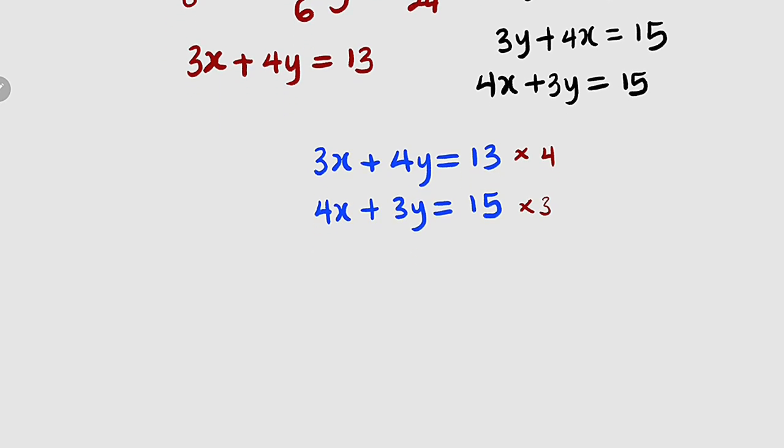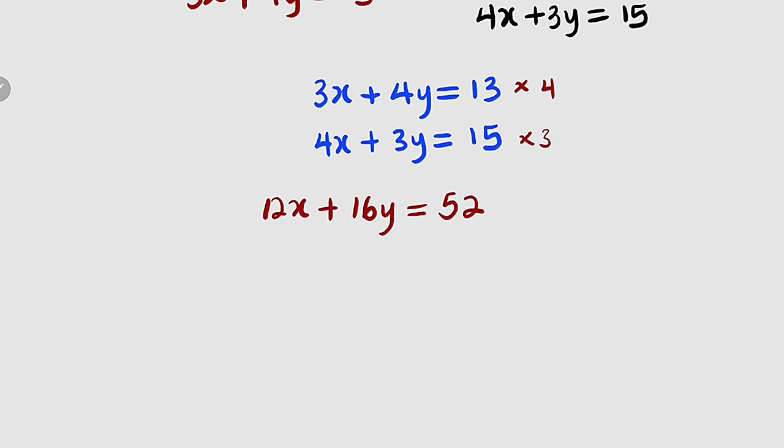If you multiply the first equation by 4, 4 times 3x will give us 12x, plus 4 times 4y will give us 16y, equal to 4 times 13 is 52. Then second equation multiplied by 3. We have 3 times 4x is 12x, plus 3 times 3y is 9y, this is equal to 3 times 15 is 45.